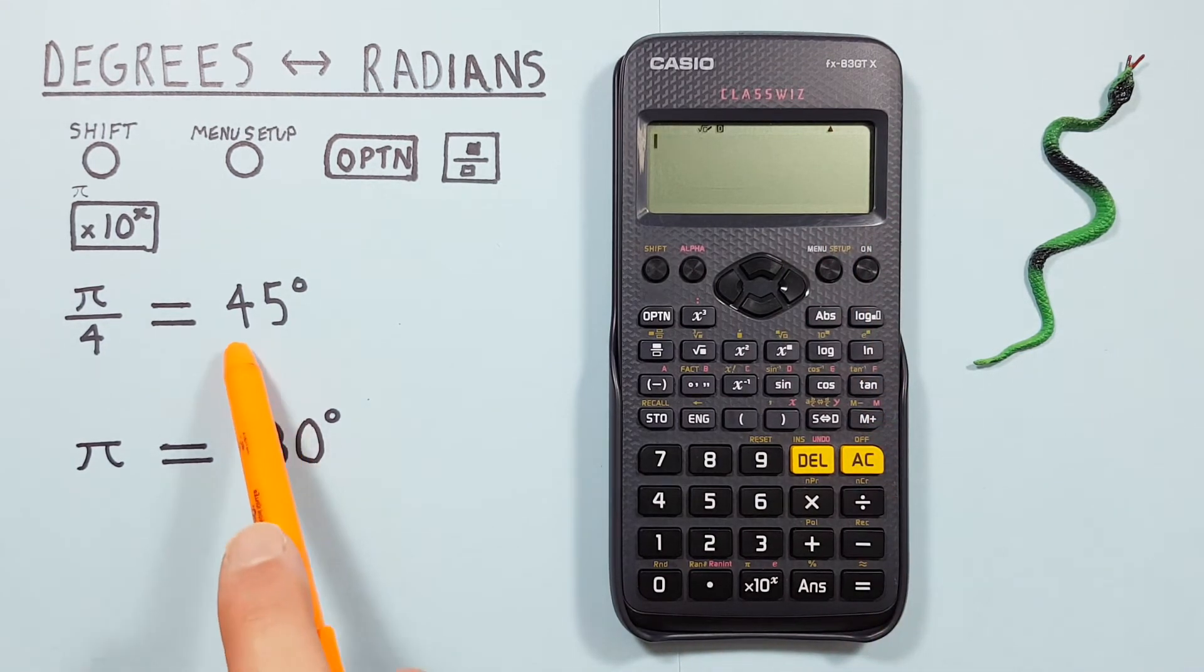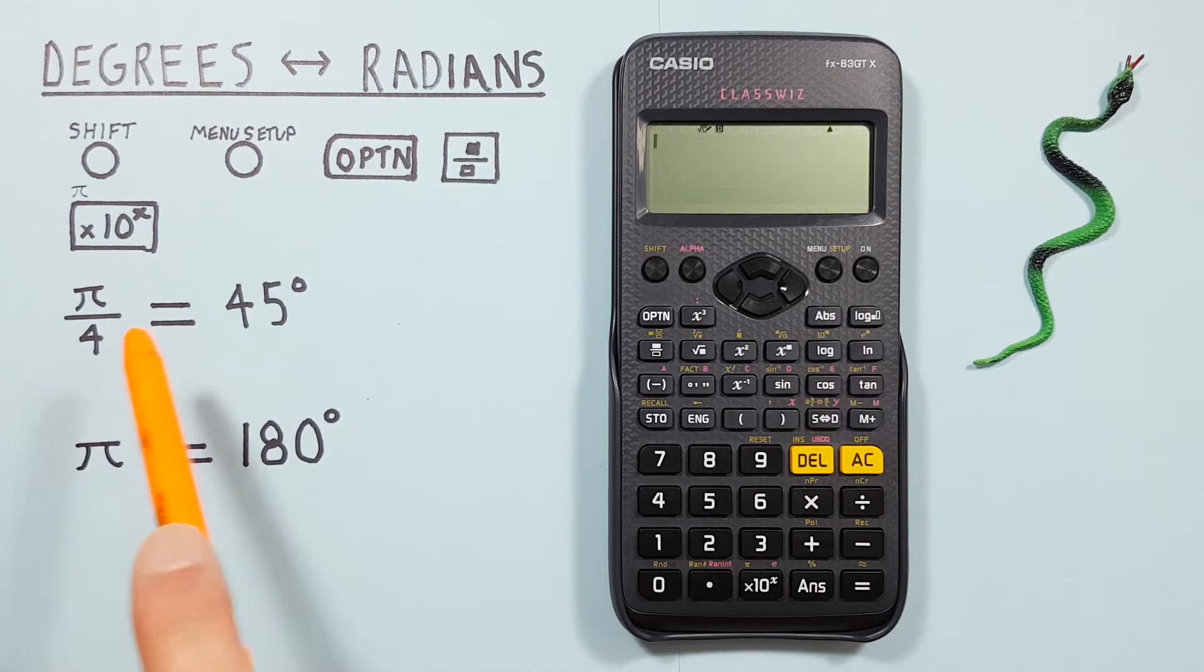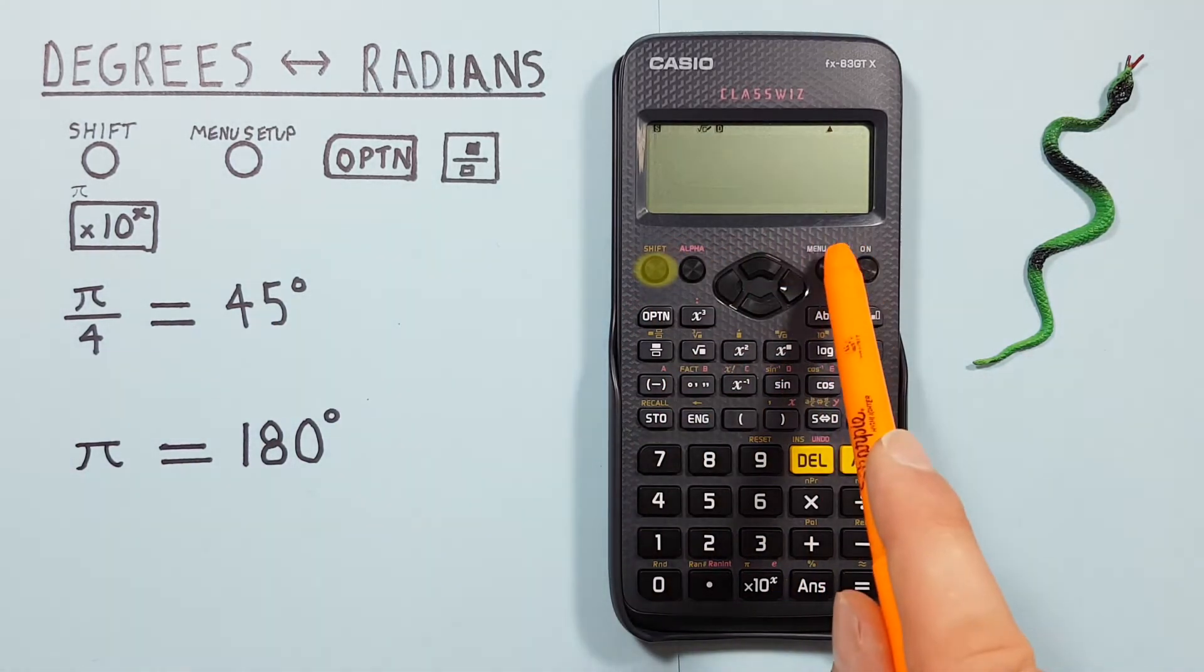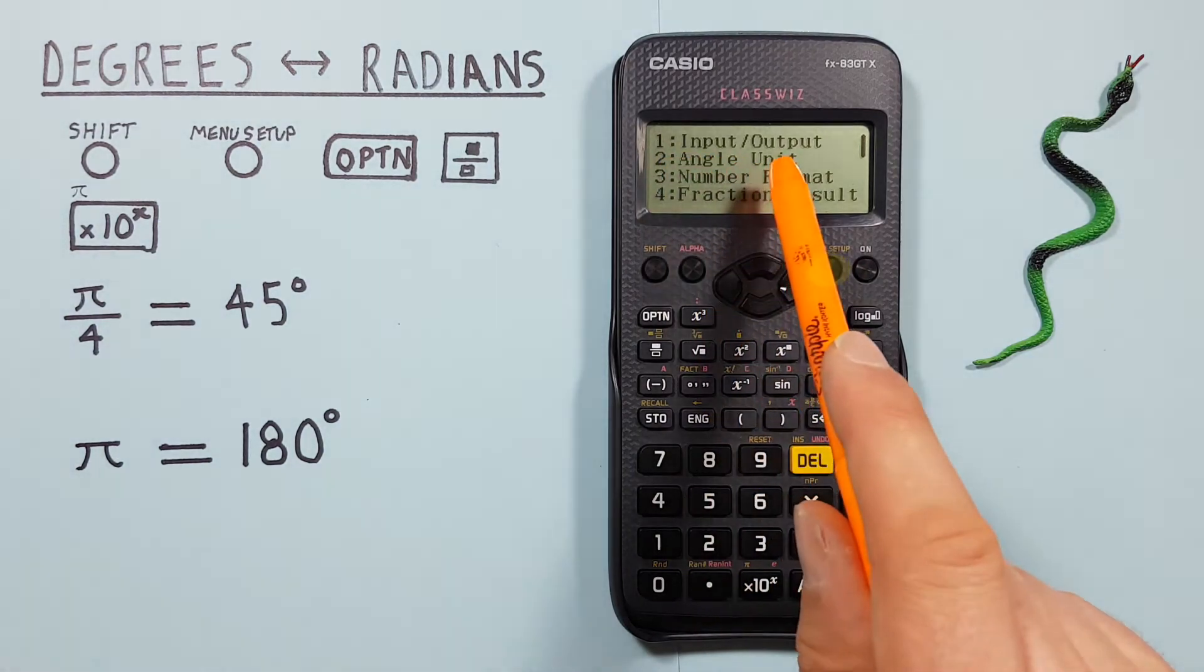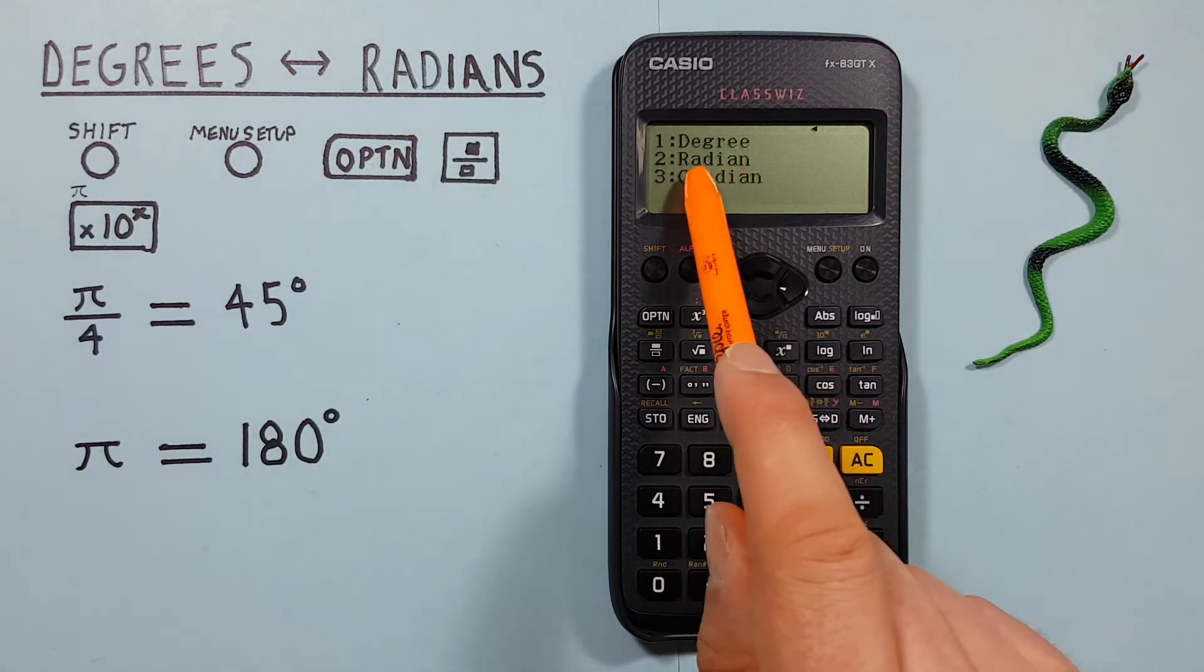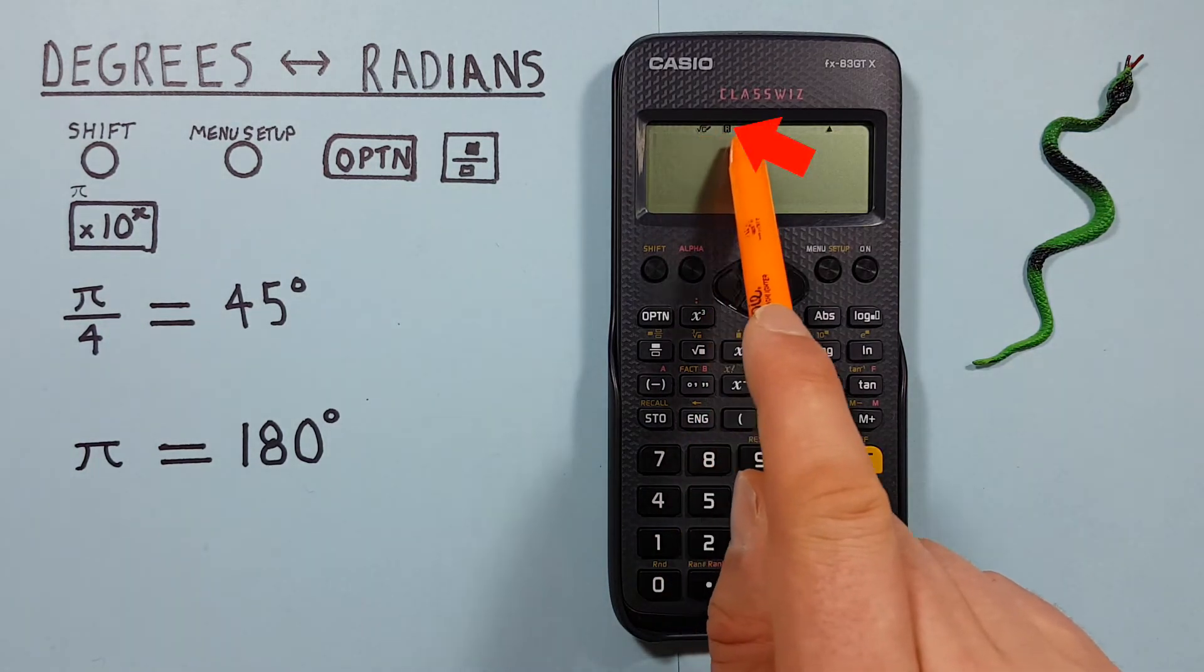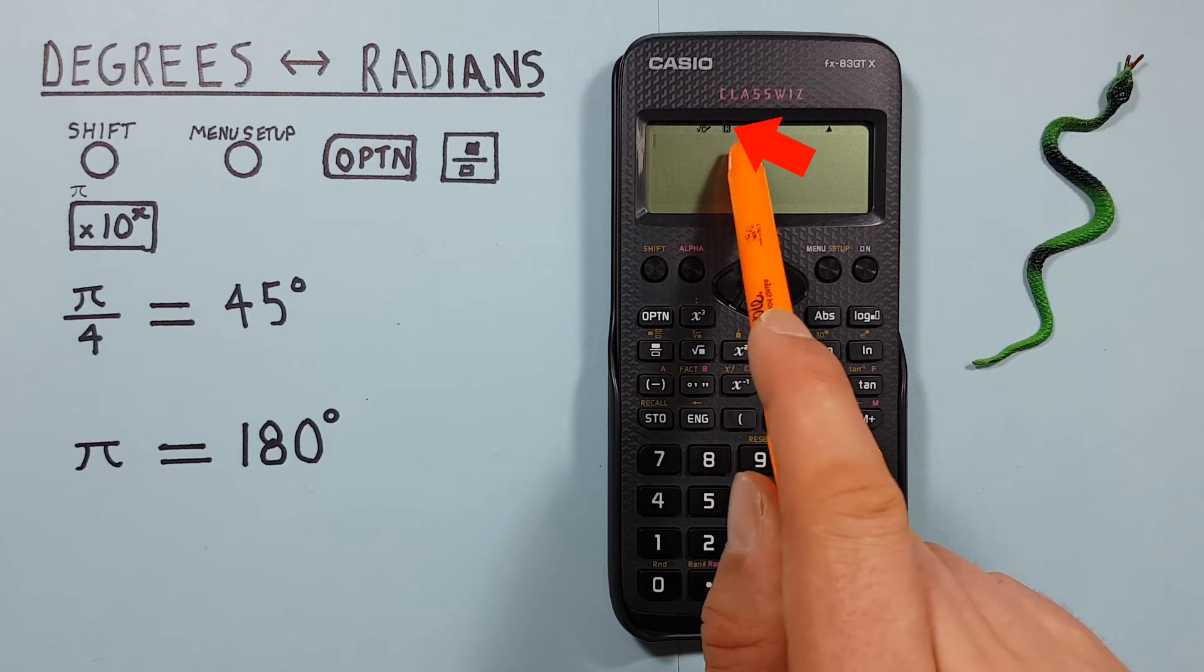What if we have the degrees and want to convert that to the radians? Well, first thing again, we set our calculator to the mode we want our results in. So for this example, it would be radians. We press Shift, Menu, select number 2 Angle Units, and then number 2 for radians. And now we see an R at the top of our screen, letting us know we're in radians mode.